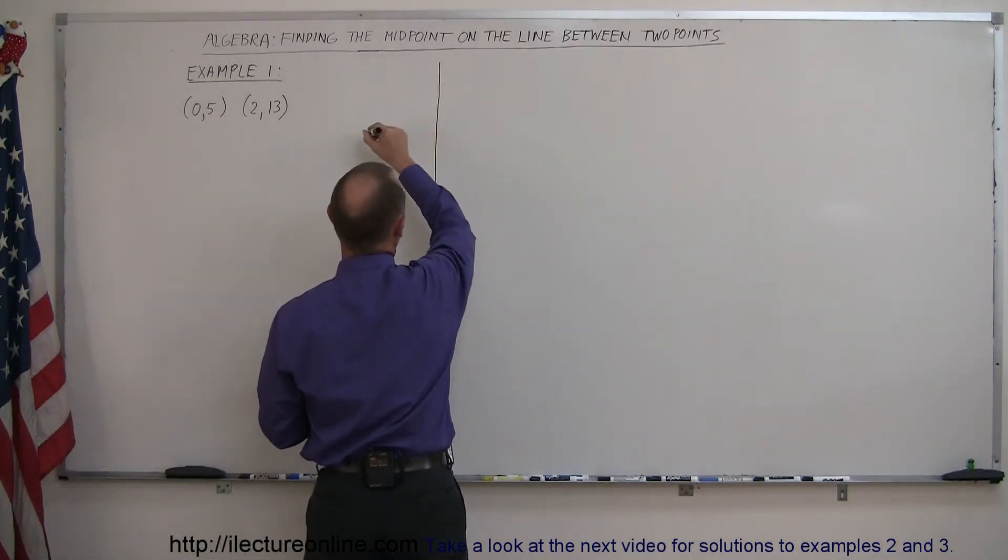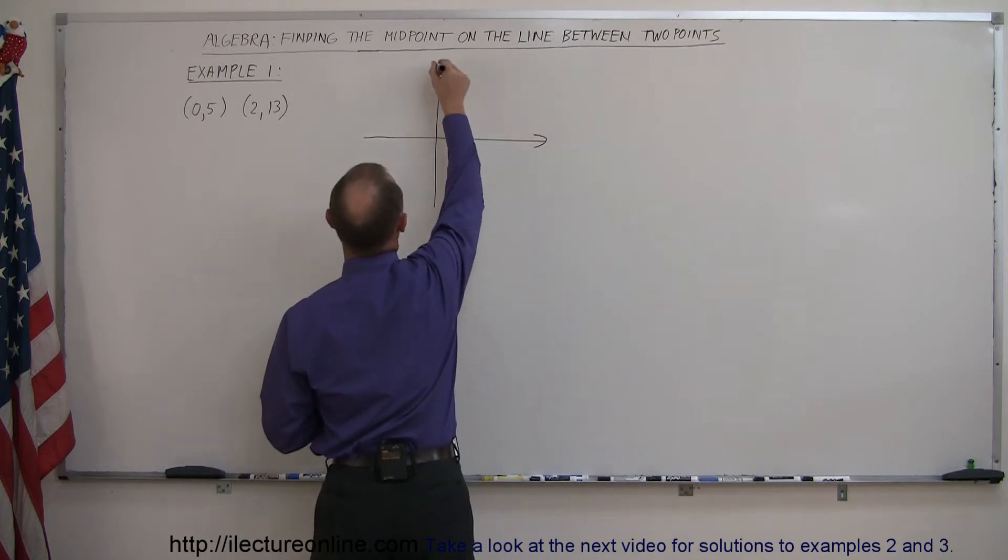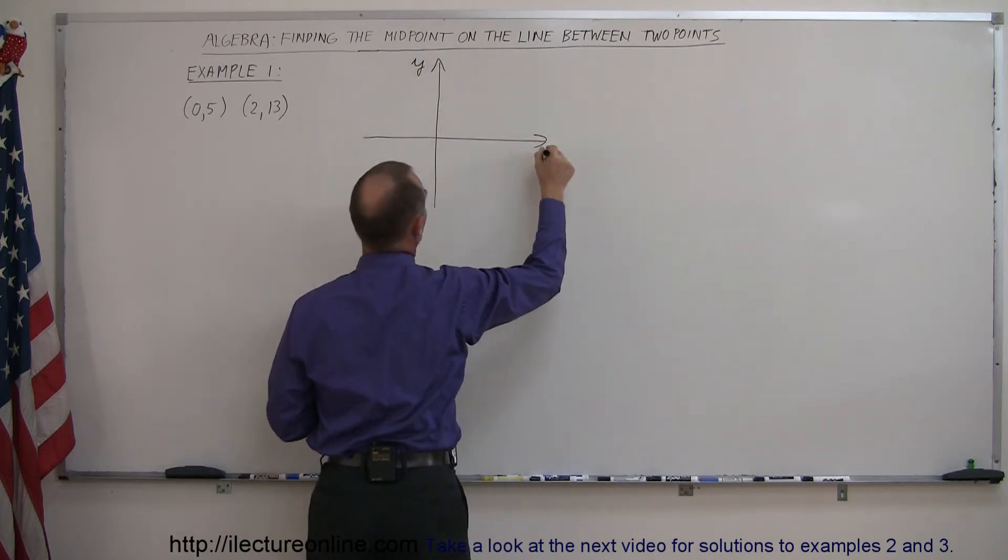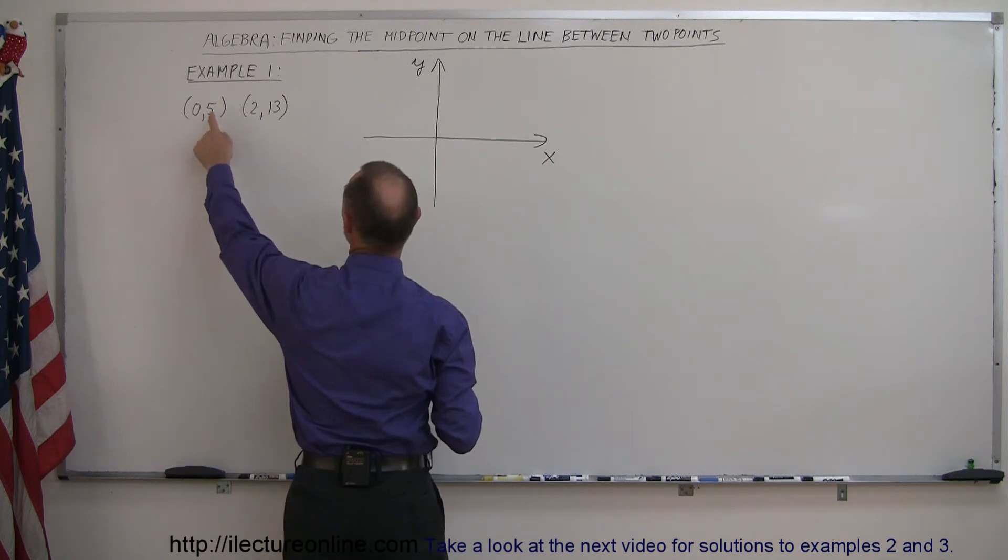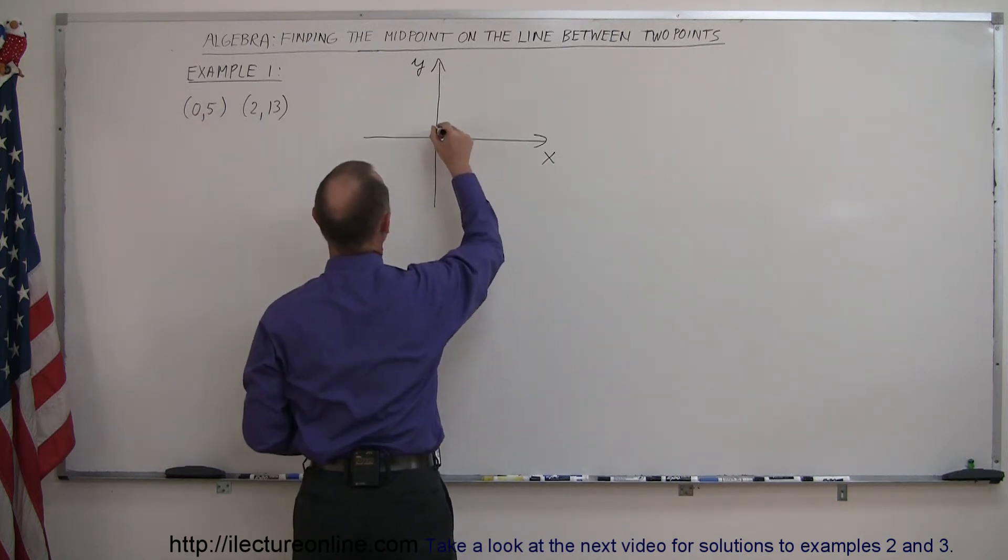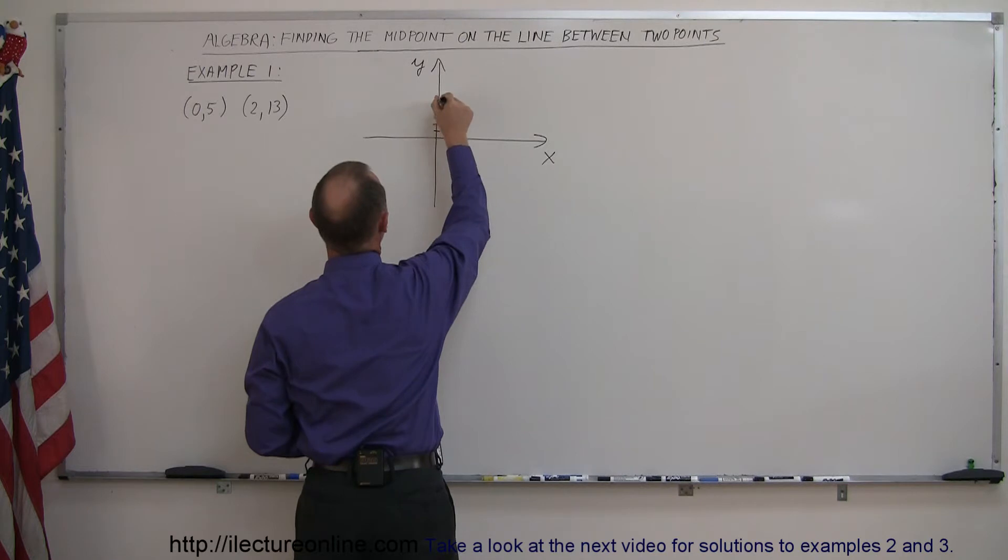So here's our y-axis, here's our x-axis. Let's label them. Finding our first point, we have x equals zero, y equals 5, so that's right there, 1, 2, 3, 4, 5, and there's our first point right there.